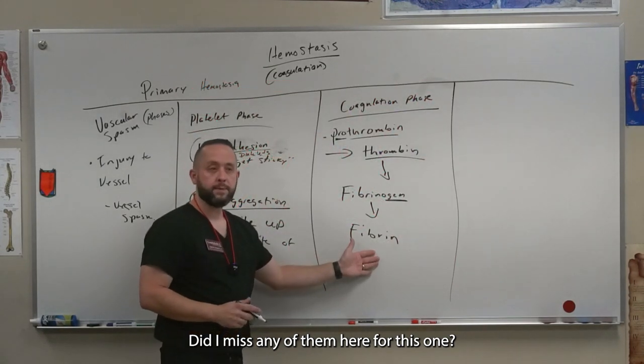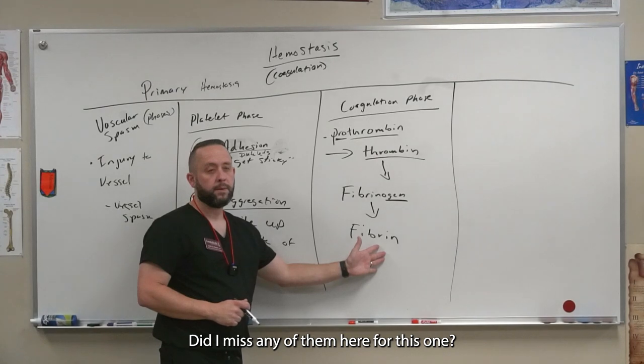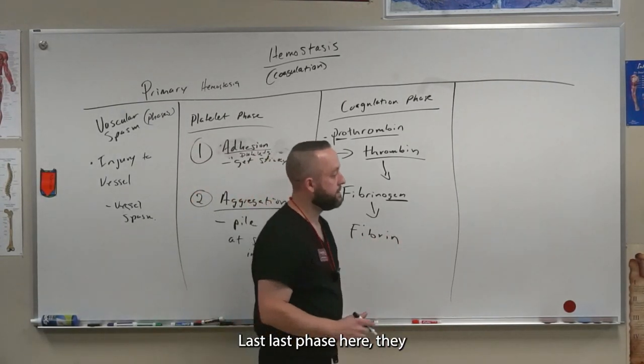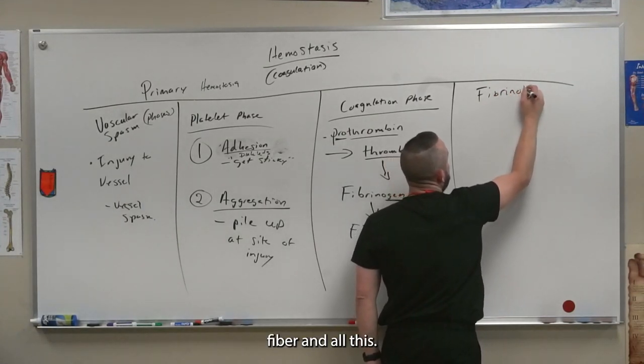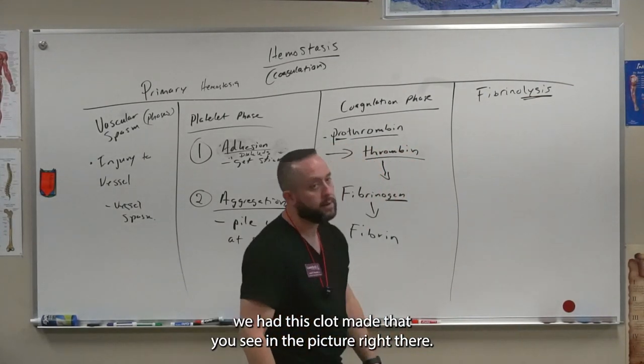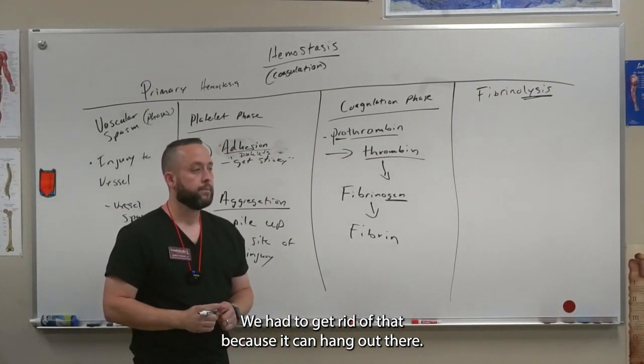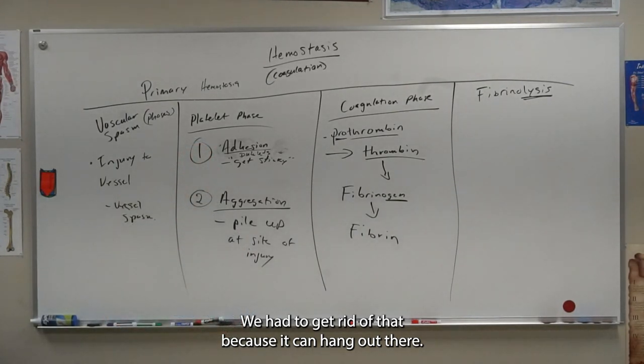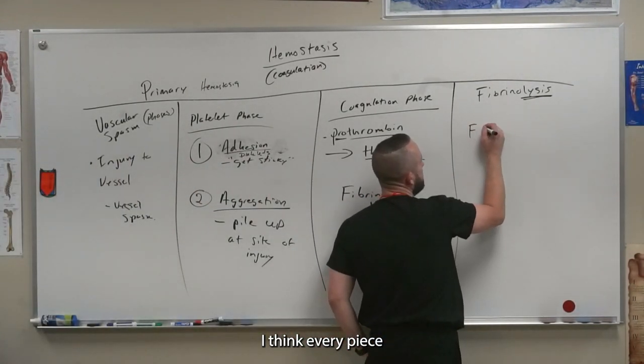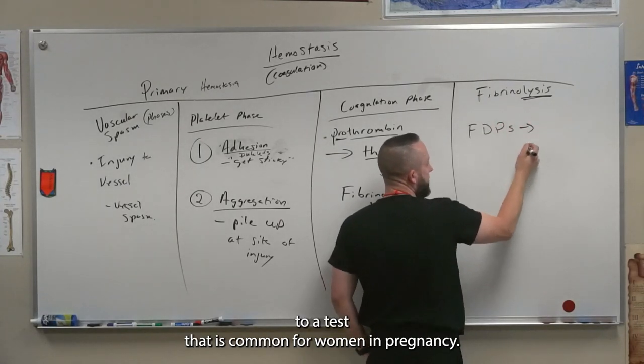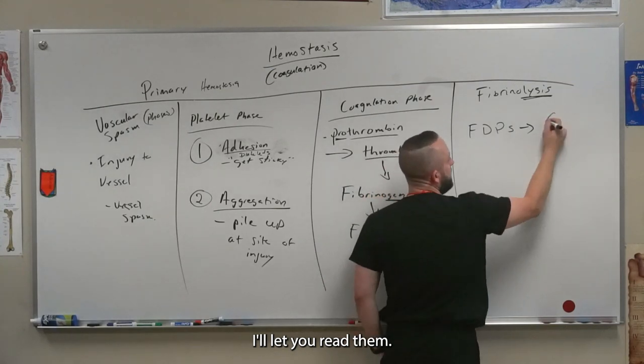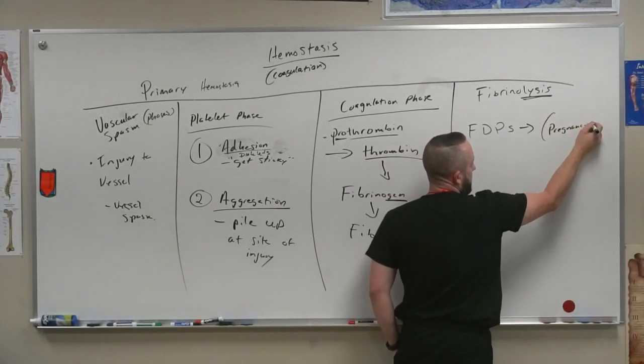Last phase here then. Fibrinolysis. So the lysis or the cutting of fibrin. We have this clot made that you see on the picture right there. We have to get rid of that because it can't hang out there. Some of this is useful, some of it's not. I think FDPs can lead to a test that is common for women in pregnancy that are having problems. That's fibrin degradation products. I'll let you read that. Just remember, it's referring to pregnancy there.